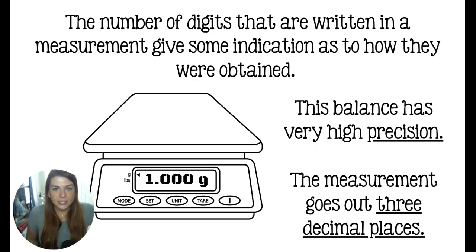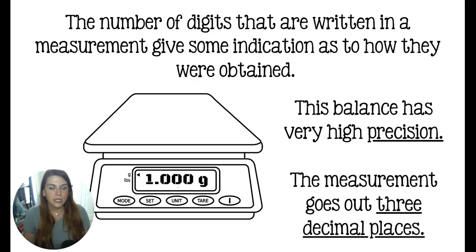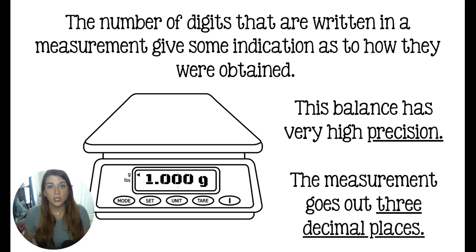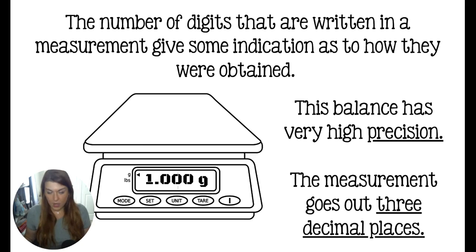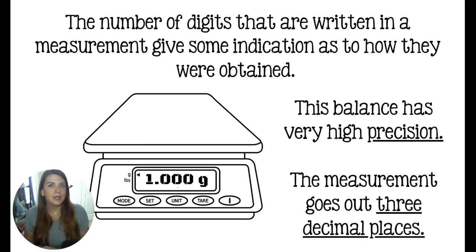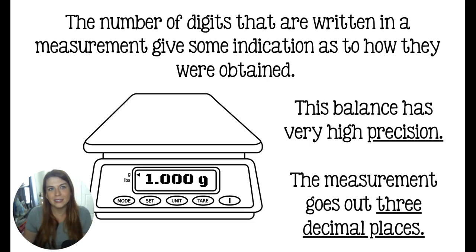This balance has a high degree of precision and goes out three decimal places. The number of digits on your measurement gives some indication of the precision of the tool. So if you have 1.000 grams, you know you're working with a really expensive tool versus a not-so-expensive one. This is how scientists communicate with each other without really saying their tool is precise — they just record a measurement with lots of decimal places, and that does all the talking for them.